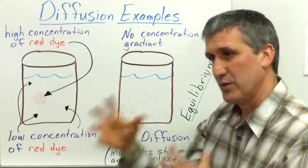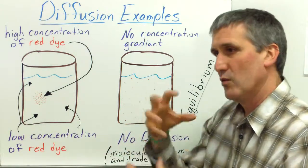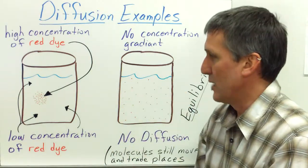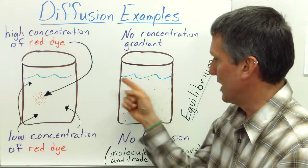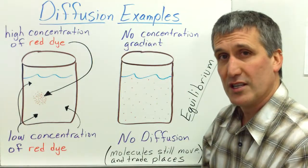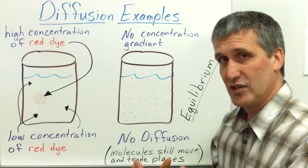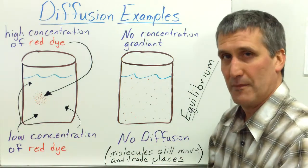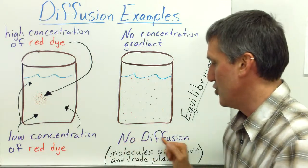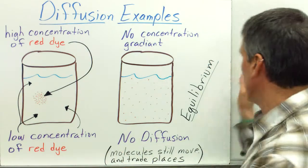And this will happen without any energy input, just from the random movement of molecules bumping into each other, the dye bumping into the water, the water bumping into the dye, and probability. And it actually spreads from high concentration to low concentration. Eventually it reaches the stage where there's no longer a concentration gradient because the dye molecules are equally distributed. That's called equilibrium. The molecules are still moving, changing places, bumping off each other, but there's no diffusion because there's no net movement from high concentration to low concentration.